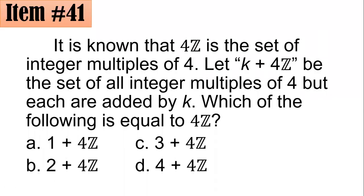It is known that 4Z is the set of integer multiples of 4. Let k plus 4Z be the set of all integer multiples of 4, but each are added by k. Which of the following is equal to 4Z? Is it 1 plus 4Z, 2 plus 4Z, 3 plus 4Z, or 4 plus 4Z? We'll see. What's your guess? For this one, this is in fact 4Z.